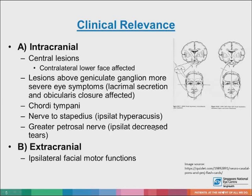Extracranial lesions occur during the extracranial course of the facial nerve, distal to the stylomastoid foramen. Only the motor function of the facial nerve is affected, resulting in paralysis or severe weakness of the muscles of facial expression.